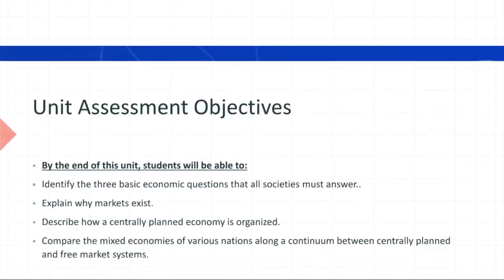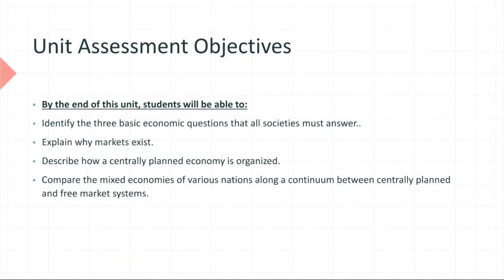Let's begin by looking at the unit assessment objectives. By the end of this unit, students will be able to identify the three basic economic questions that all societies must answer. In Unit 1, we discussed concepts such as scarcity and opportunity cost. Now we will begin by asking: what to produce, who to produce, and for whom to produce.